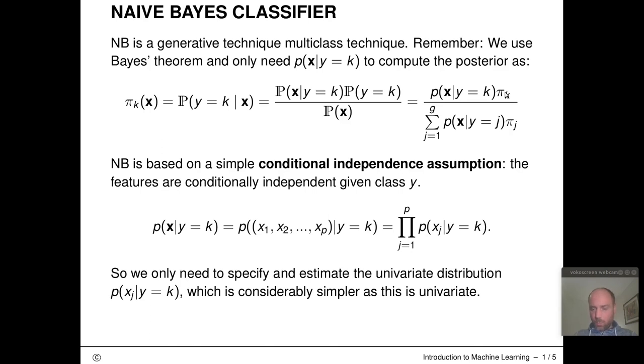One is the prior probabilities pi_k, the global class frequencies in our training dataset. The other component is this class conditional density, given that we are in class k. For this, we have to make some kind of distributional assumption. For LDA and QDA, we assumed this is a multivariate Gaussian.